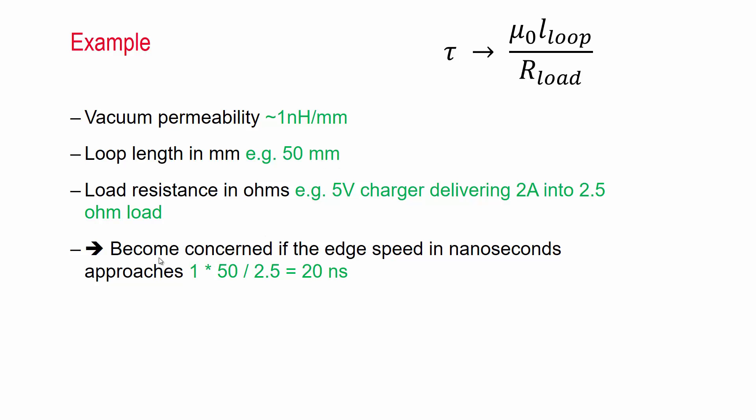So given this rule of thumb, we need to become concerned if the edge speed in nanoseconds approaches 1 times 50 divided by 2.5, which is 20 nanoseconds. We have to use these units consistently. But if our principal power supply edge approaches this value, then we need to be concerned about voltage spikes.